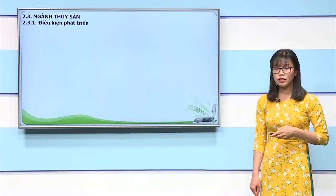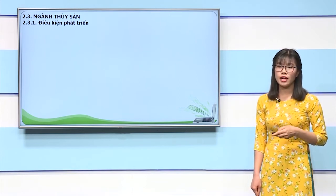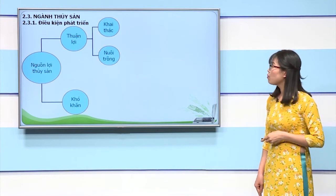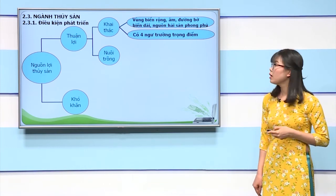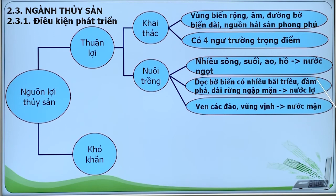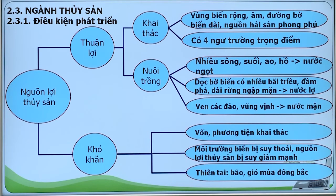Về ngành thủy sản, chúng ta tìm hiểu các nguồn lợi thủy sản. Về mặt thuận lợi đối với khai thác: vùng biển nước ta rộng, ấm, đường bờ biển dài nên nguồn hải sản phong phú. Dọc bờ biển có nhiều bãi cá, bãi tôm, các ngư trường, trong đó có 4 ngư trường trọng điểm: ngư trường Hải Phòng - Quảng Ninh, ngư trường Quần đảo Hoàng Sa - Trường Sa, ngư trường Ninh Thuận - Bình Thuận - Bà Rịa Vũng Tàu và ngư trường Cà Mau - Kiên Giang. Đối với nuôi trồng, nước ta có nhiều điều kiện thuận lợi ở cả ba môi trường: nước ngọt, nước lợ và nước mặn. Về khó khăn: thiếu vốn, phương tiện khai thác thô sơ, môi trường biển bị suy thoái, nguồn lợi hải sản bị suy giảm, và có nhiều thiên tai như bão, gió mùa đông bắc.